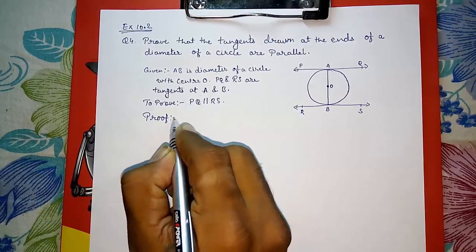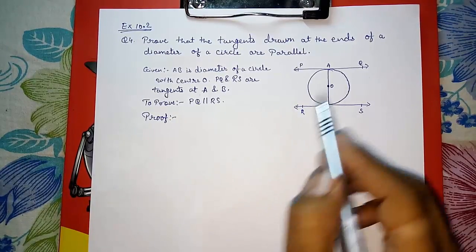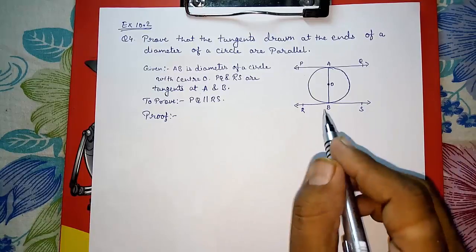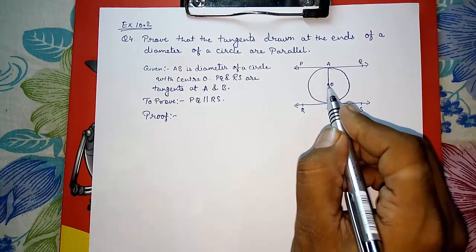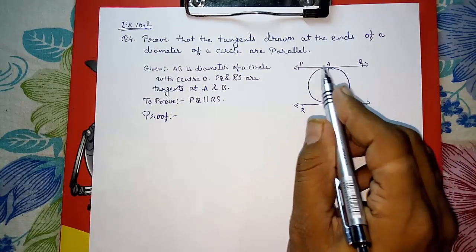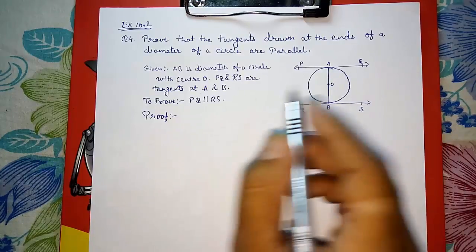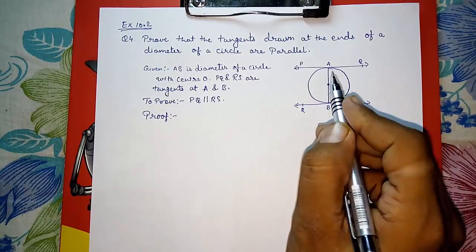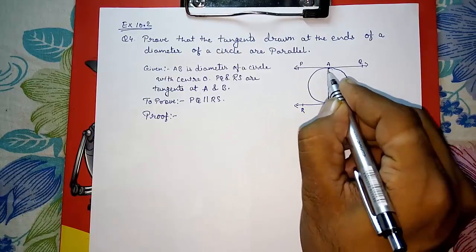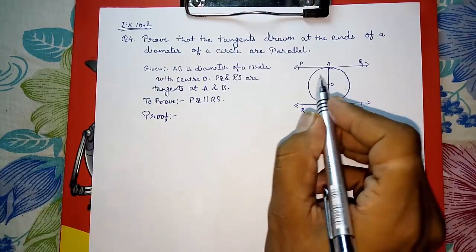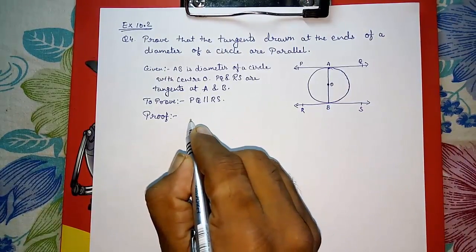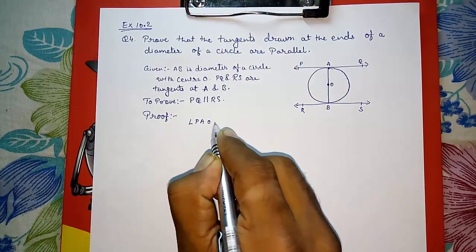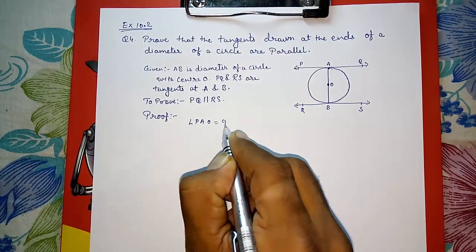Now for the proof: OA is the radius and PQ is the tangent, so the radius is always perpendicular to the tangent at the point of contact by Theorem 10.1. Therefore, angle PAO is equal to 90 degrees — this is Result 1.